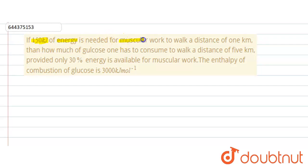Then how much glucose one has to consume to walk a distance of five kilometer? We have provided only 30 percent of energy is available for work. The enthalpy of combustion of glucose is 3000 kilojoule per mole.